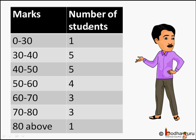So what do class teachers do in this case? They say how many students scored between 0 to 30, how many scored between 30 to 40, and so on. To present such a large amount of data so that a reader can make sense of it easily, we condense it into groups like 0 to 30, 30 to 40, 40 to 50, and so on.